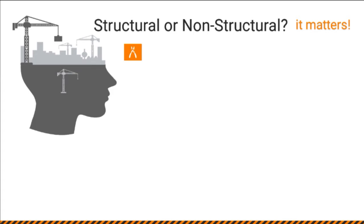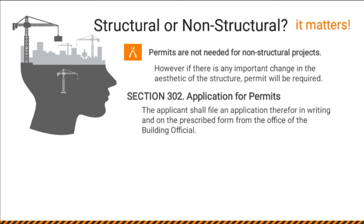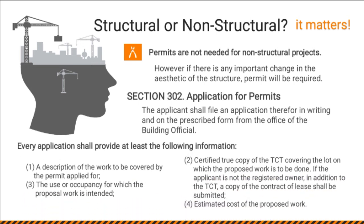Structural or non-structural? It matters. Permits are not needed for non-structural projects. However, if there is an important change in the aesthetic of the structure, a permit will be required. Section 302, Application for Permits: the applicant shall file an application in writing on the prescribed form from the office of the building official. Every application shall provide at least the following information: (1) a description of the work to be covered by the permit applied for; (2) certified true copy of the TCT covering the lot on which the proposed work is to be done — if the applicant is not the registered owner, a copy of the contract of lease shall be submitted; (3) the use of occupancy for which the proposed work is intended; and (4) estimated cost of the proposed work.